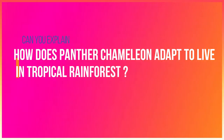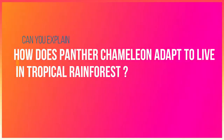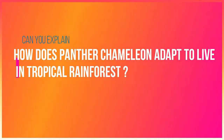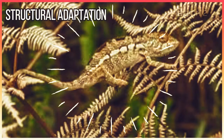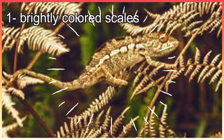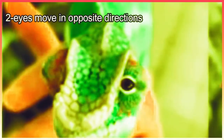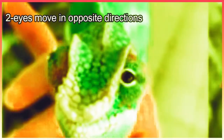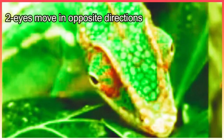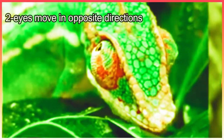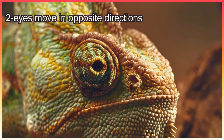How does the panther chameleon adapt to live in the tropical rainforest? It has structural adaptations. It has brightly colored scales that provide camouflage with its surrounding environment, which contains green leaves and colorful flowers. The chameleon's eyes move in opposite directions, where each eye can move independently from the other.